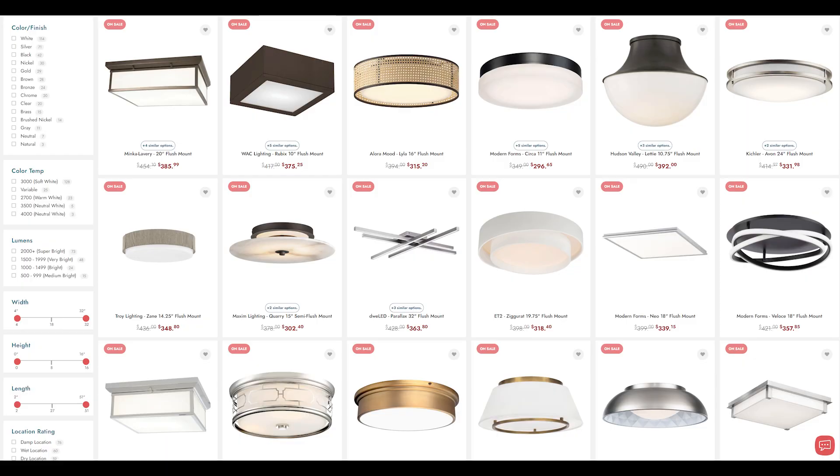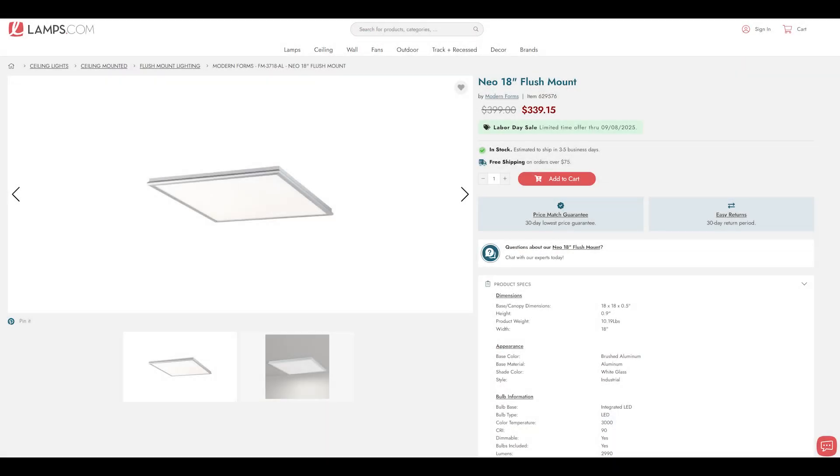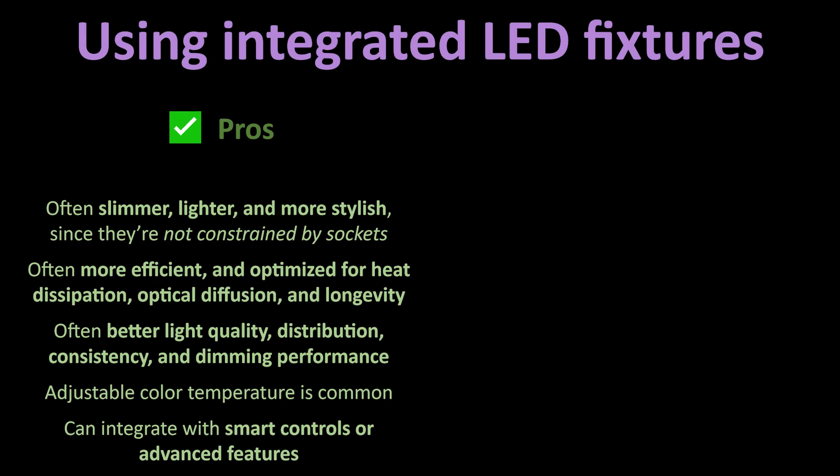The alternative is to get a new LED fixture. In the case of high-quality or specialty bulbs like PAR-38s, a new fixture may be cost-competitive or cheaper. The fixture itself is designed around LEDs. Instead of a replaceable bulb that has an integrated LED board with a driver. Think of modern recessed panels, slim ceiling lights, or decorative fixtures with built-in LEDs. The pros are that the fixtures are often slimmer, lighter, and more stylish since they're not designed around bulb sockets. These fixtures are typically more efficient, optimized for heat dissipation, optical diffusion, and longevity. You often get better light quality, distribution, consistency, and dimming performance. And often the color temperature is adjustable too. And you can integrate with smart controls or advanced features like color tuning and motion sensors.